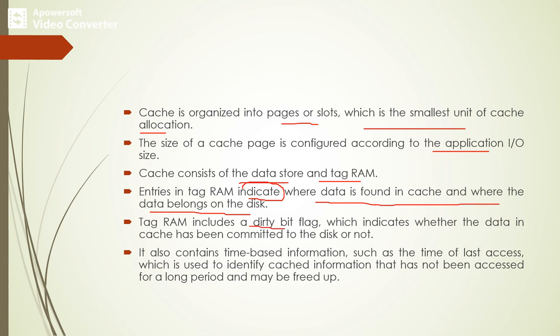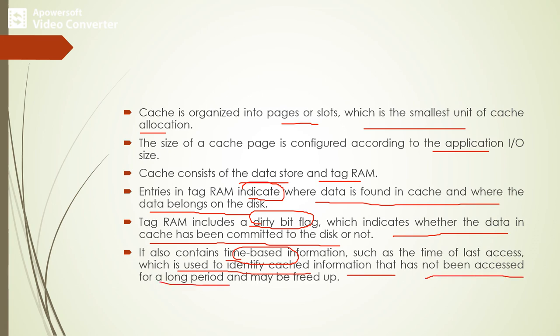The directory includes a single bit called the dirty bit, which indicates whether the data in the cache has been committed to the disk or not. It also contains additional information like time-based information such as the time of the last access, which is used to identify cache pages that have not been accessed for a longer period of time. Such pages can be freed up and flushed from the cache into the disk.